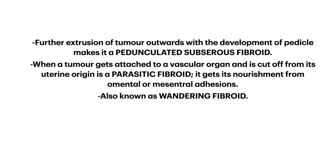Further extrusion of the tumor outwards with development of a pedicle makes it a pedunculated subserosal fibroid. When a tumor gets attached to a vascular organ and is cut off from its uterine origin it is called a parasitic fibroid. It gets its nourishment from omental or mesenteric adhesions and is also known as the wandering fibroid.